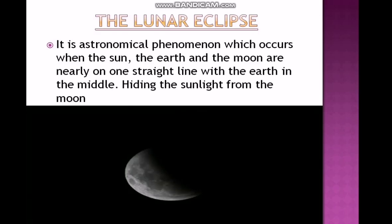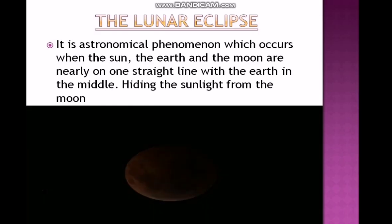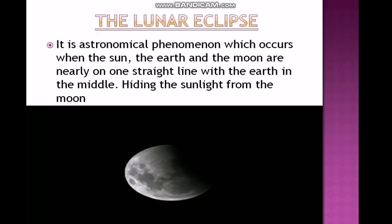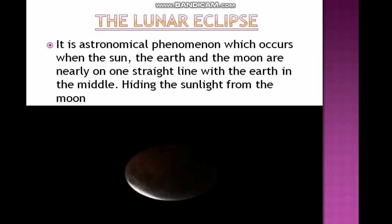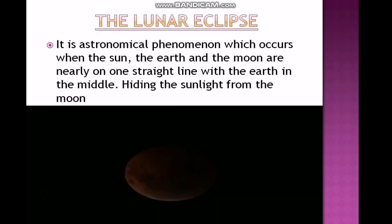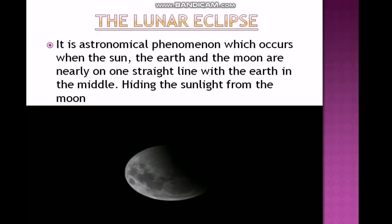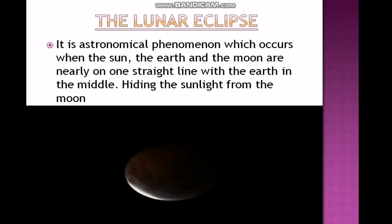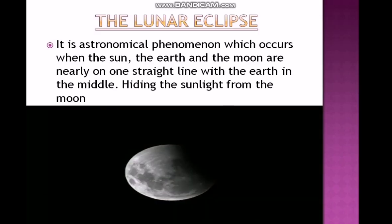A Lunar Eclipse is an astronomical phenomenon which occurs when the Sun, the Earth, and the Moon are nearly in one straight line with the Earth in the middle, hiding the sunlight from reaching the Moon. Because the Moon reflects sunlight, it can no longer do so, and the Lunar Eclipse occurs.